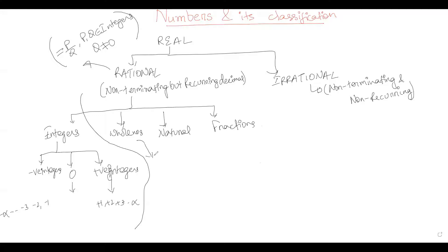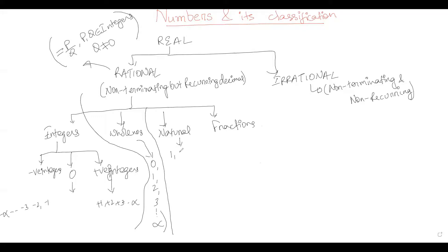Whole numbers are all positive integers along with zero — that is, zero, one, two, three to infinity. A simple way to remember: any number starting from zero that is not a fraction is a whole number. Natural numbers are the same as whole numbers except they start from one, not zero — so one, two, three and so on.